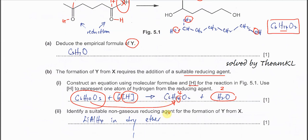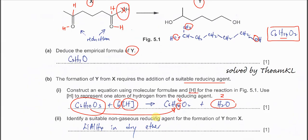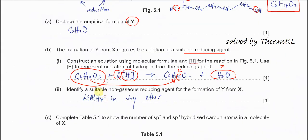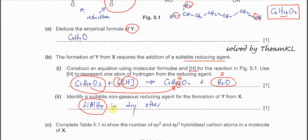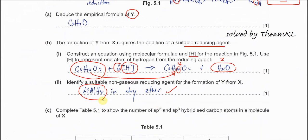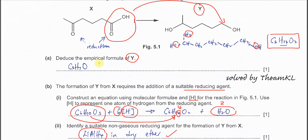To identify the suitable reducing agent: you cannot use sodium borohydride or other reducing agents — you must use lithium aluminum hydride. This is because only lithium aluminum hydride can reduce a carboxylic acid to an alcohol. Of course, lithium aluminum hydride can also reduce the ketone to a secondary alcohol.